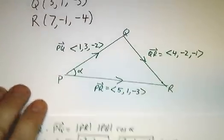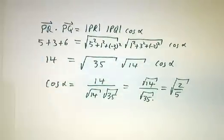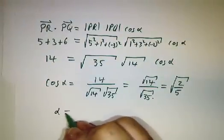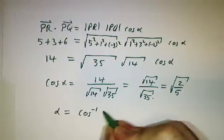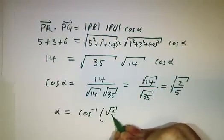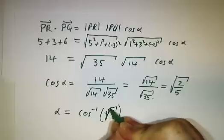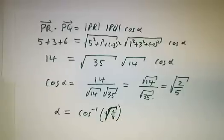Next, we're gonna try to figure out, so that gives us our cosine, and then if we want alpha, we have to take the inverse cosine of the square root of 2 fifths. Pull out a calculator, you get that angle.